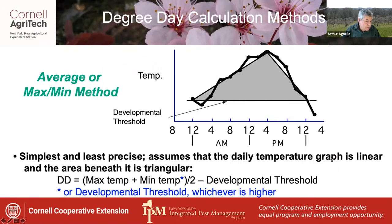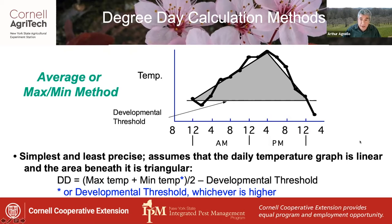The simplest and least precise method of calculating degree days is the average or max-min method, which assumes that the daily temperature graph is linear and the area beneath it is triangular. The area beneath the curve in the triangle is one half the base times the height.